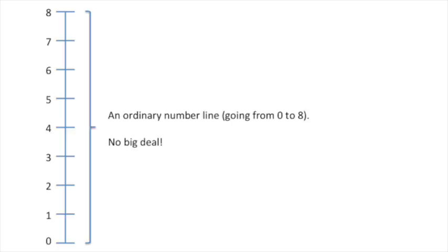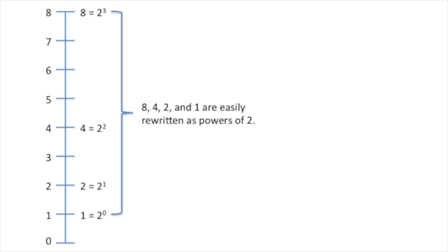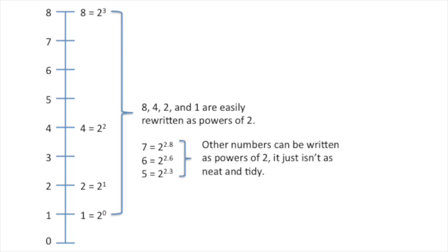Let's start with an ordinary number line going from 0 to 8. 8, 4, 2, and 1 are all easily rewritten as powers of 2. The other numbers on the number line, like 7, 6, or 5, they can also be written as powers of 2 — it just isn't as neat and tidy. Even pi can be written as a power of 2.